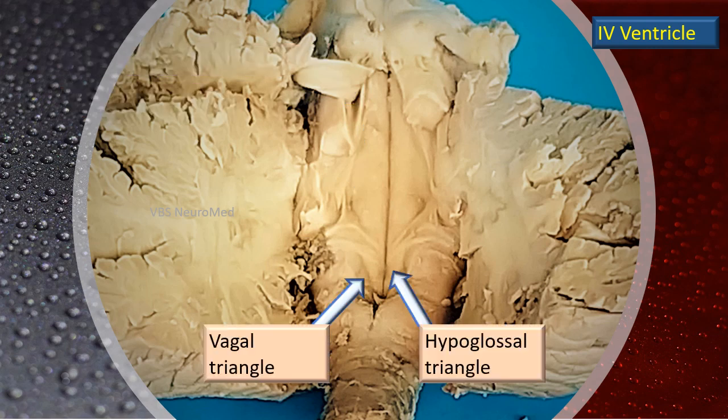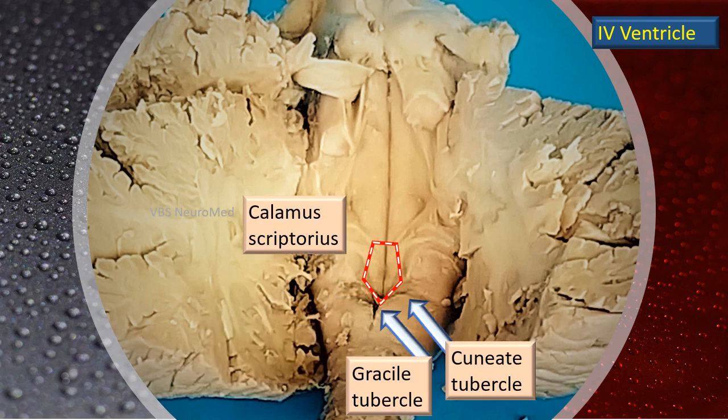Lower down, when the sulcus limitans is traced downward, the inferior fovea expands to cover a triangle called the vagal triangle. Medial to the vagal triangle, the extension of the median eminence is the hypoglossal triangle. That means deep to these two are, respectively, the hypoglossal nucleus and the vagal nucleus. The gracile tubercle and the cuneate tubercle are also important landmarks forming the inferolateral boundary in this region.